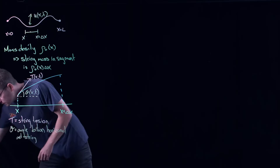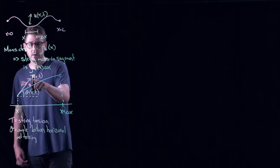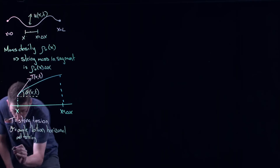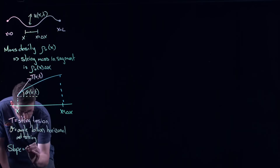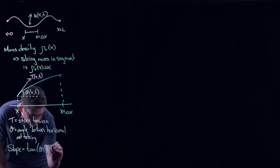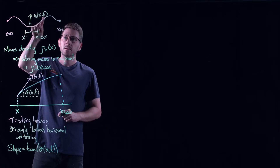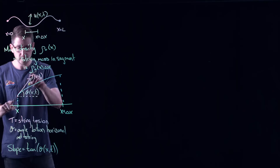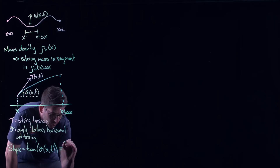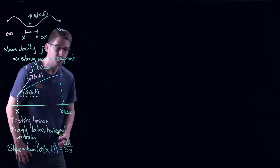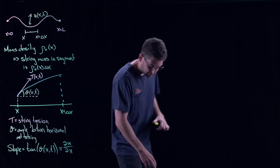The slope of the tensile force tangent can be described in terms of that angle as tan(theta(x, t)), which is just basic trigonometry. But remember, u(x, t) is the displacement, and since the tension is a tangent vector, whenever we think of tangent vectors we think of derivatives. So this slope is also just the partial derivative of the displacement with respect to x — because we are moving in the x direction and time is held fixed.